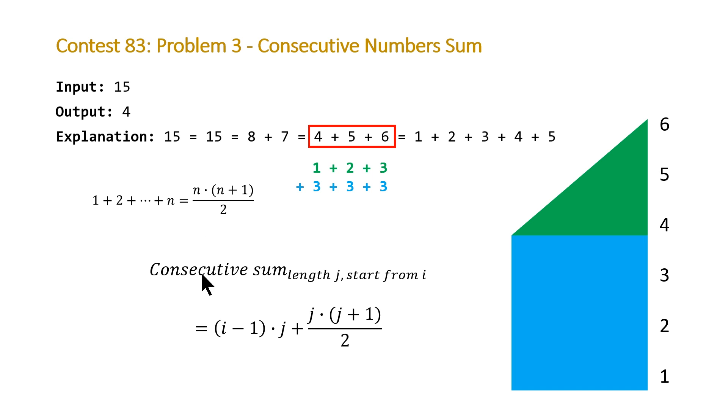The consecutive sum of a sequence with length J starting from the value I is equal to (I-1) times J plus J times (J+1) divided by 2. Here we're starting from the value 4, so we would plug 4 in to get 3, and J is going to be 3 as well. So it'll be 3 times 3 plus 3 times 4 divided by 2, and that will give us 15.